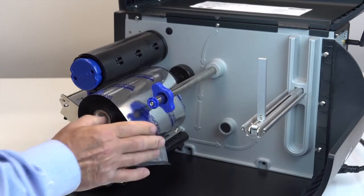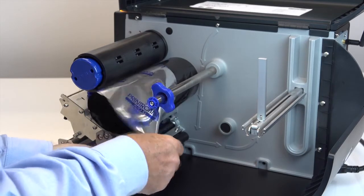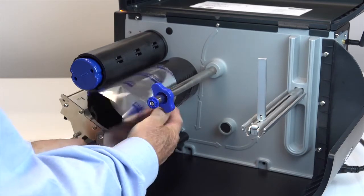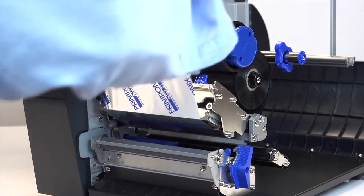Slide the ribbon roll onto the ribbon supply spindle until it stops against the spindle flange. Thread the end of the ribbon under the back of the upper deck, over the top of the media sensor assembly, and then between the platen roller and the print head.